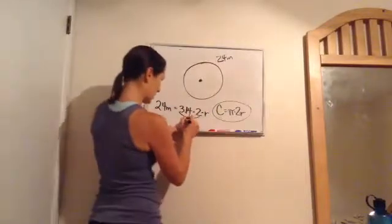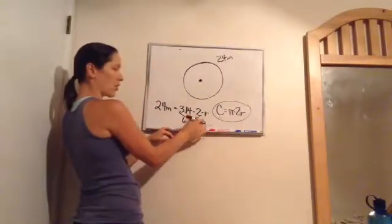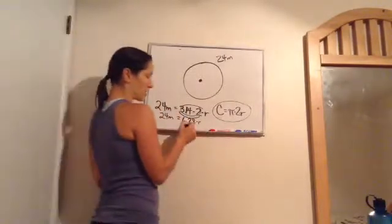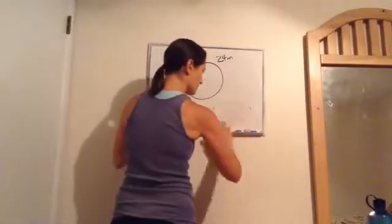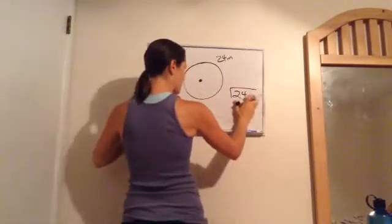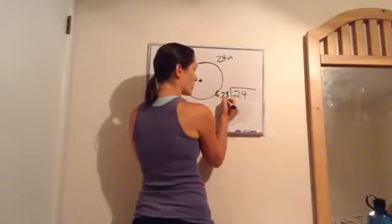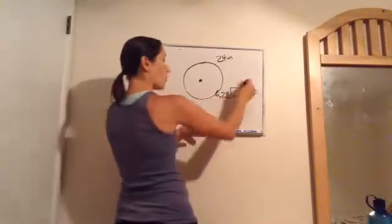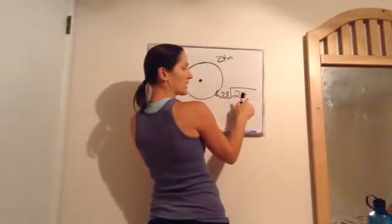I multiply 3.14 times 2 and get 6.28, so now I have 6.28 times r = 24. I'm asking myself: 6.28 times what equals 24? I need to divide. Taking 24 divided by 6.28 — I need to make 6.28 a whole number by moving the decimal two places, doing the same to 24 to get 2400 divided by 628.